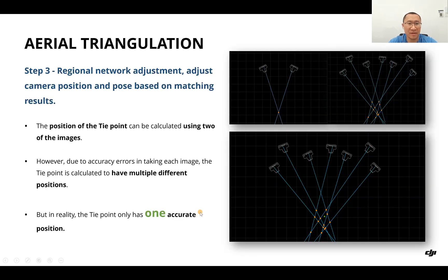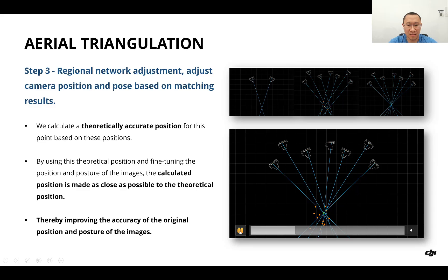In step three, we do regional network adjustment, adjusting camera position and pose based on matching results. The position of the tie point can be calculated using two images. However, due to accuracy error in taking each image, the tie point is calculated to have multiple different positions. But in reality, the tie point only has one actual position. We calculate a theoretically accurate position for this point based on these positions.